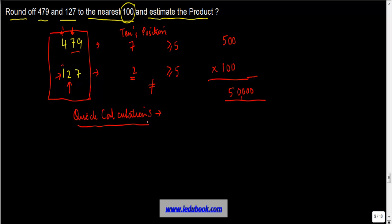You might be required to do certain quick calculations. For example, you might be told to find out the product of 479 into 127, and typically in these cases you would have normally not more than one minute to solve it.